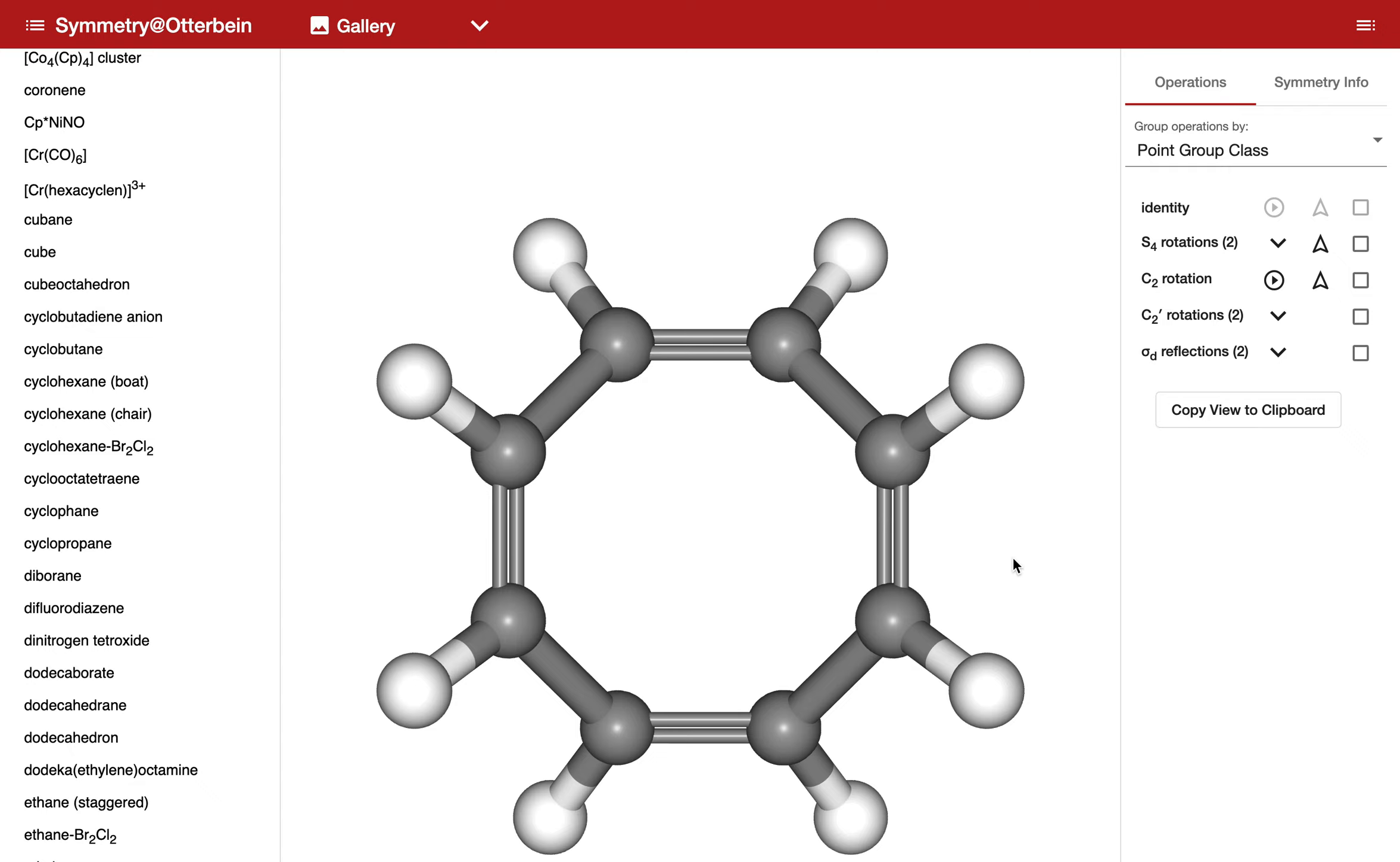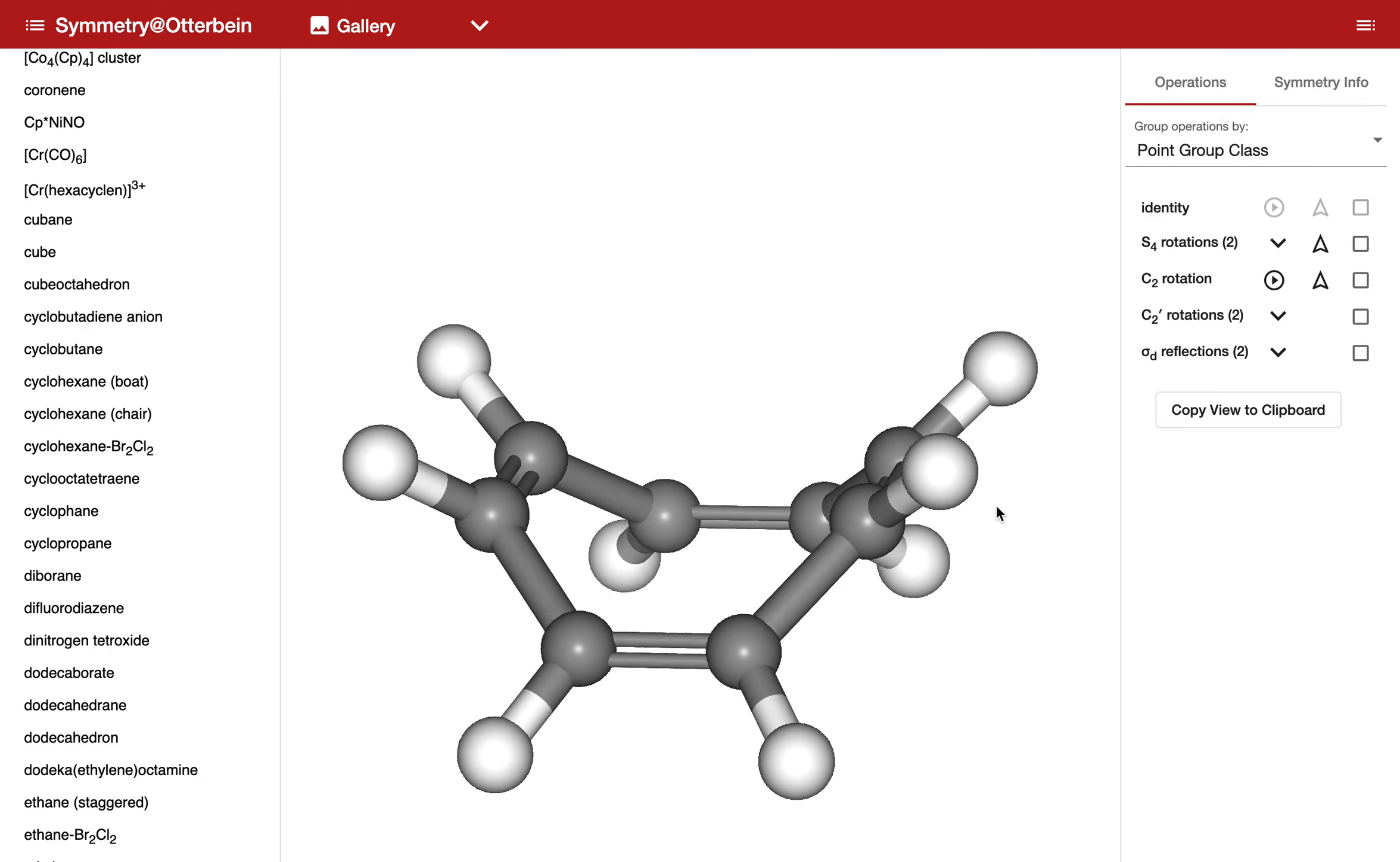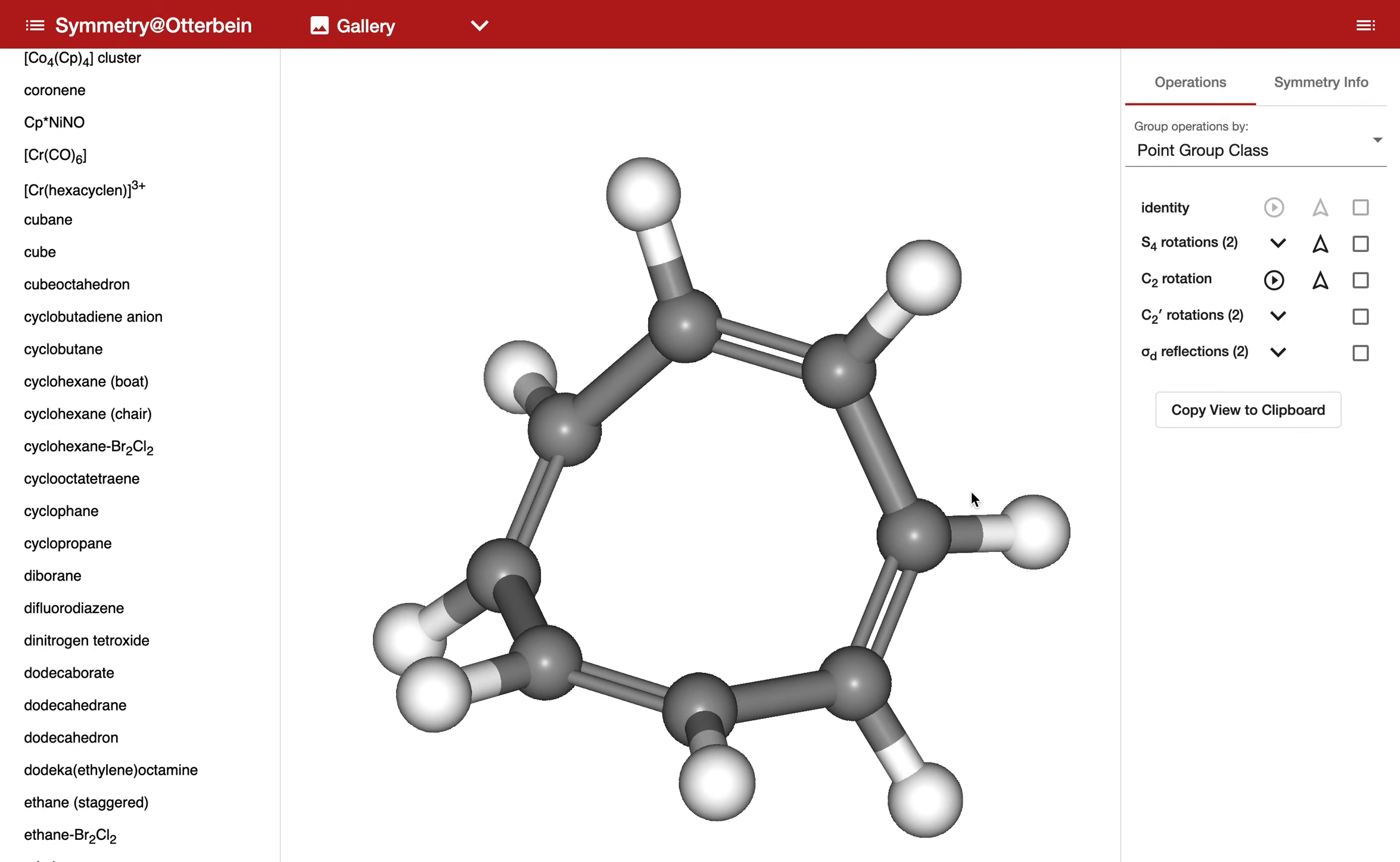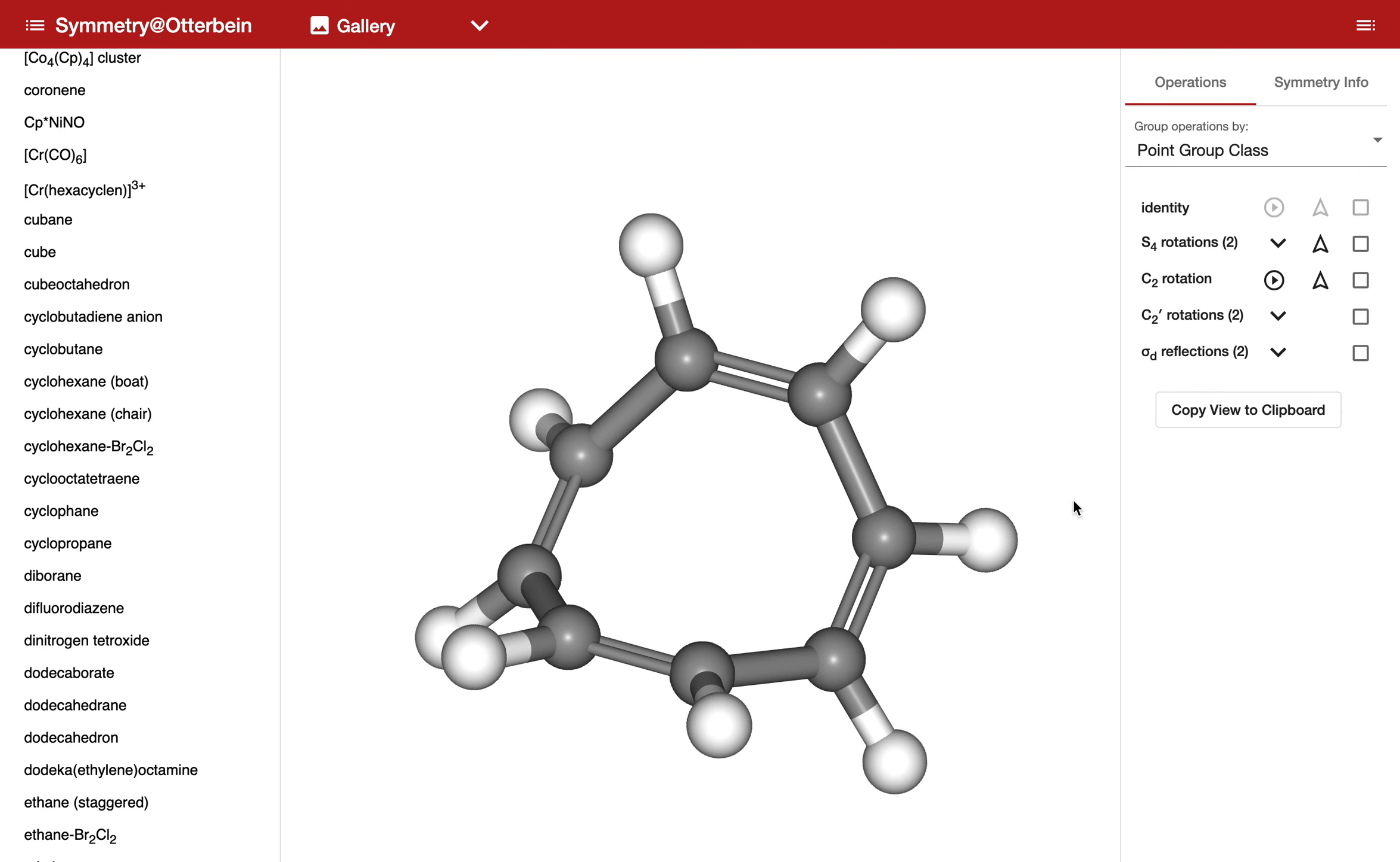Here's cyclooctatetraene. I can't even say it. You'll see that if we rotate it around, it's got a very unusual shape. Something that would take us a while to find the symmetry elements associated with this shape. Let me make it a little bit smaller so it all fits on the page.